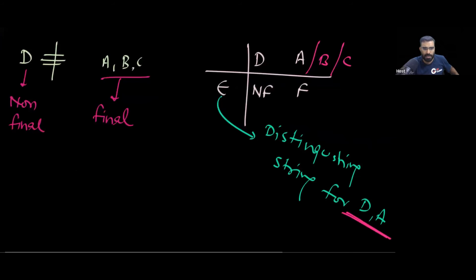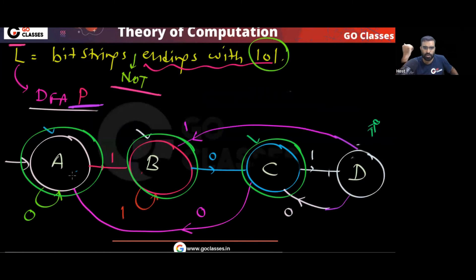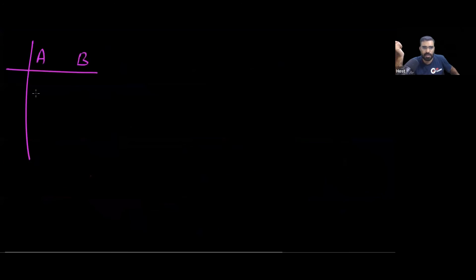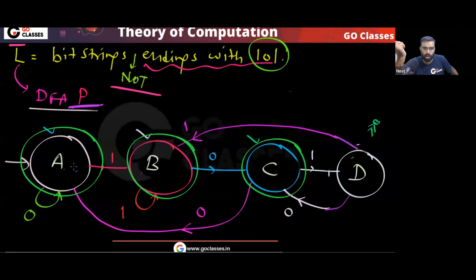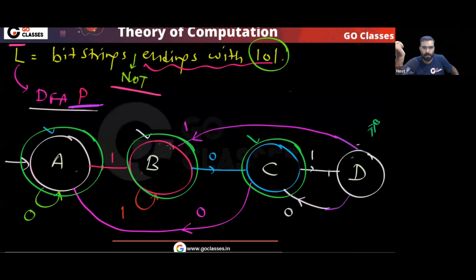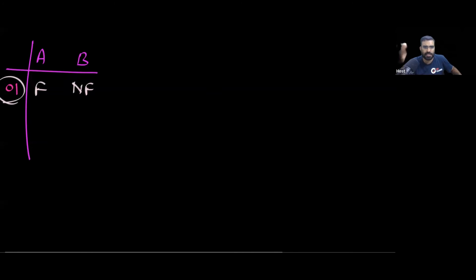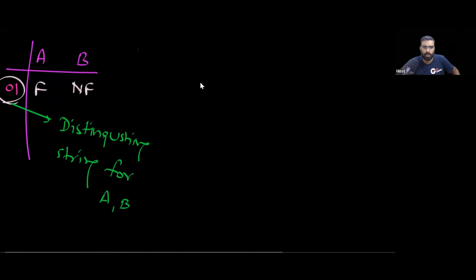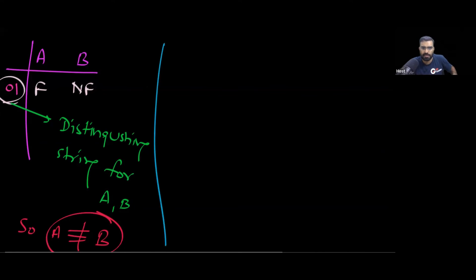What about states A and B? Using string '01': A goes to a final state on '01', but B goes to a non-final state on '01'. So '01' is a distinguishing string for A and B — they are not equivalent and cannot be merged.